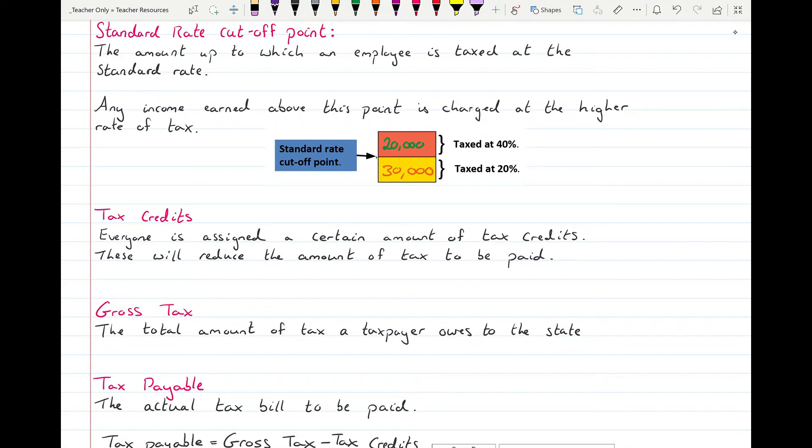Tax credits then are a thing which everyone is assigned and they reduce the amount of tax you need to pay. So you might get tax credits for things like if you have expenses or if you're claiming back tax on things, they might assign you credits. They're good. You want to increase your credits in order to decrease the amount of tax you have to pay. Credit is good.